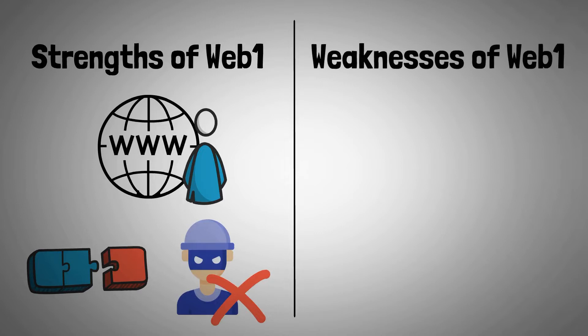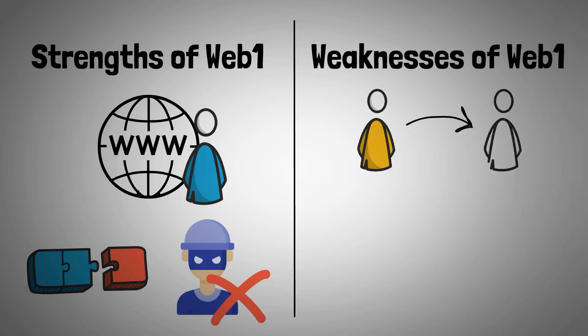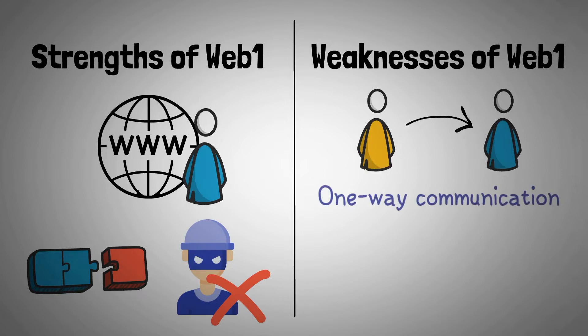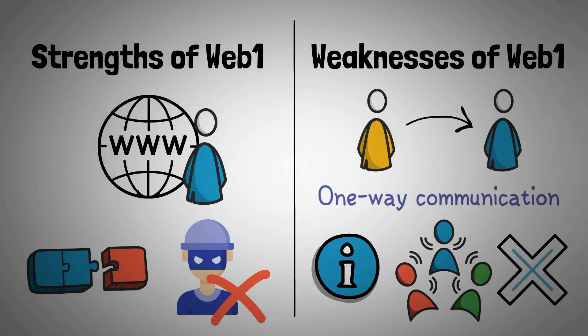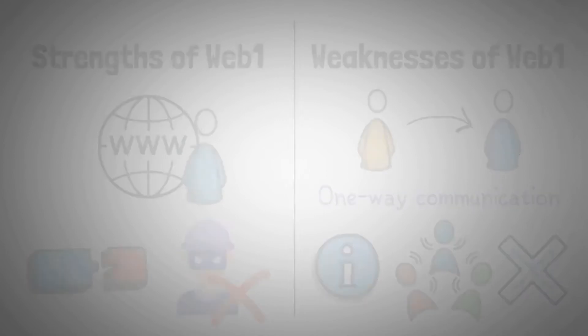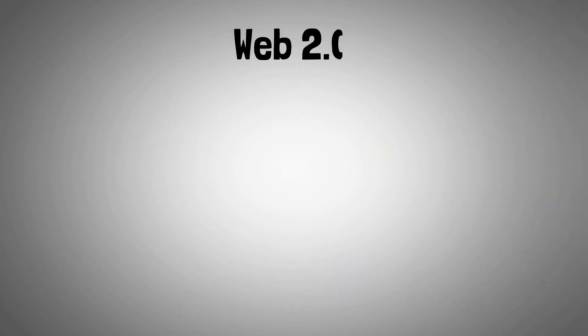Web 1.0's weaknesses include being a one-way communication technology, allowing only one-way communication from the creator to the user. It was merely an information portal with no user interaction or participation.